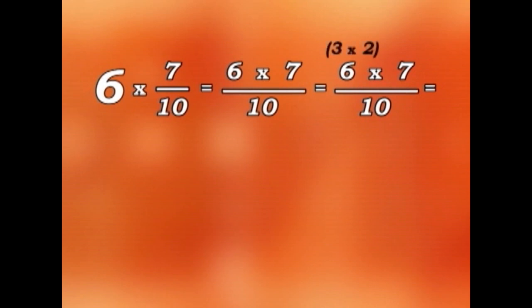6 is the same as 3 times 2. So 6 and 10 have common factor 2. So 6 times 7 becomes the same as 3 times 7 over 5.